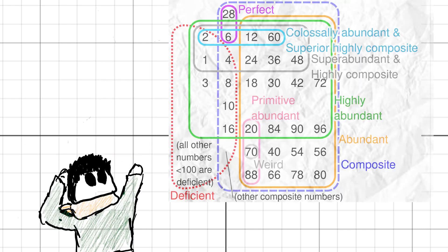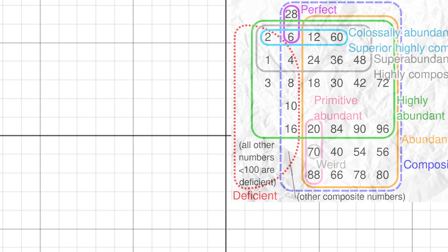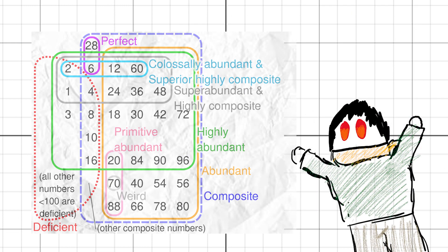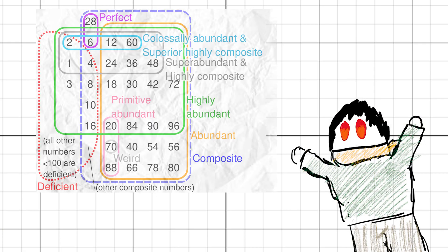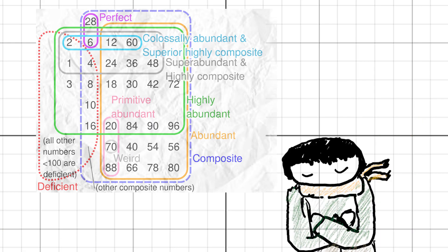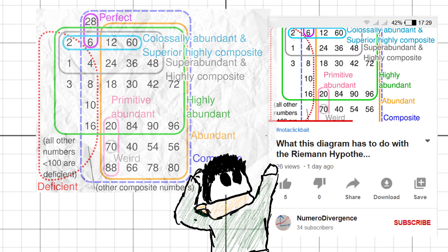My friend sent this to me one day, a diagram that looks like a giant convoluted math lasagna. I would have brushed it away, but then I saw it was being blatantly classist. Calling numbers perfect? Weird? Not under my watch.